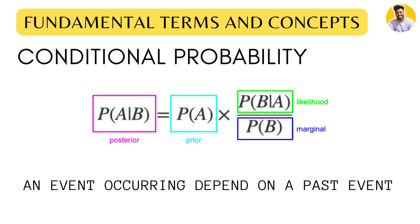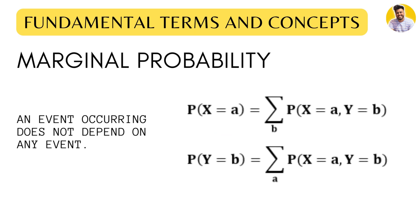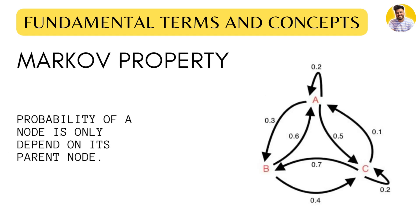Now let's talk about the basic terms used in Bayesian networks. The first is conditional probability, which represents the probability of one event occurring given that another event has already occurred. In Bayesian networks, the probability of a node taking on a certain value depends on the value of its parent node. Next is marginal probability, which represents the probability of a single event occurring regardless of other variables. Finally, the Markov property states that the probability of a node depends only on the values of its parent nodes, not on non-parent nodes. This property allows us to represent complex systems with a relatively small number of variables.